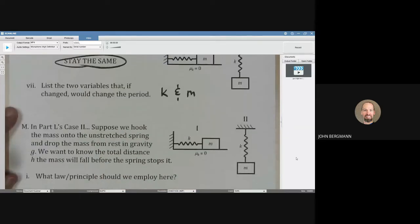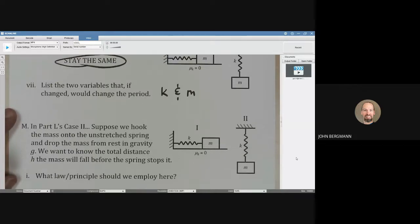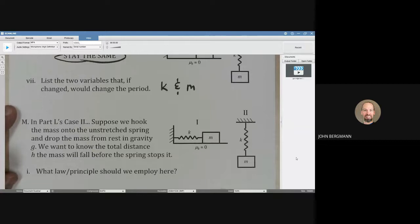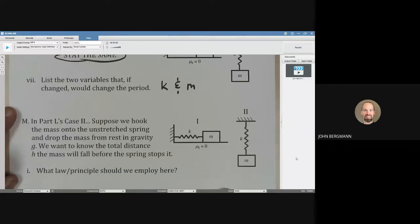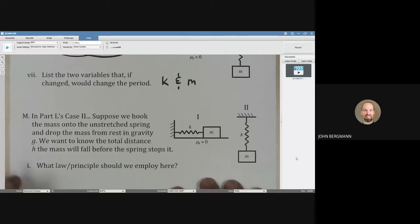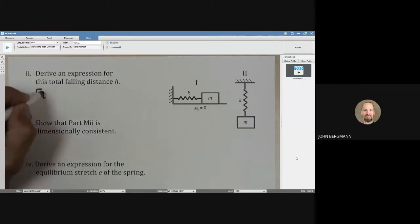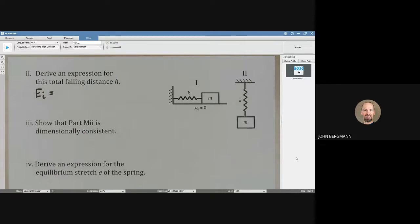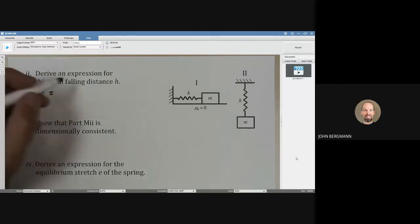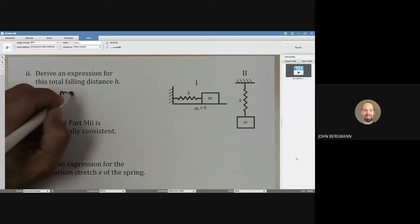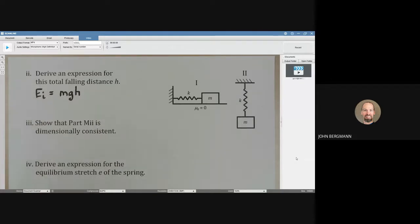Suppose we hook the mass onto the unstretched spring and drop the mass from rest in gravity. And we want to know the total distance that the mass is going to fall before the spring stops it. What law or principle should we employ here? We are going to employ conservation of energy. Let's see if we can demonstrate that. The initial energy, we're going to raise the mass to where the spring isn't stretched at all. So the initial energy is going to simply be the mass times G times however far it's going to fall, which we don't know. We're going to say that at the bottom of its path, that's going to be the reference line.